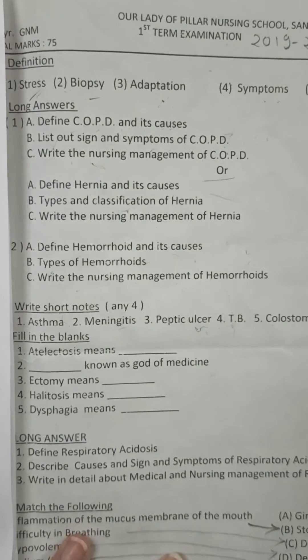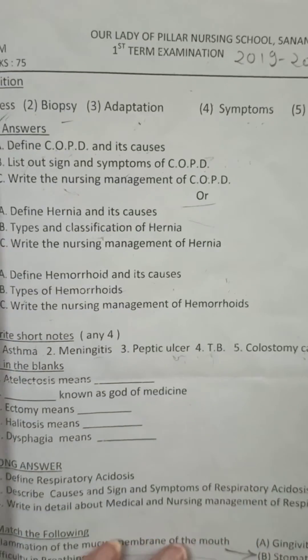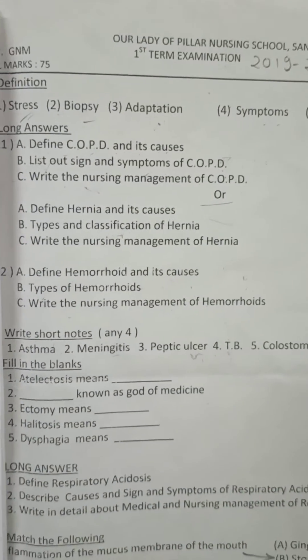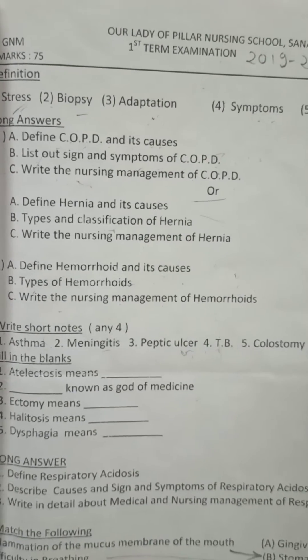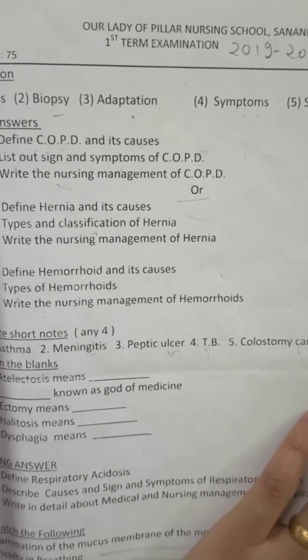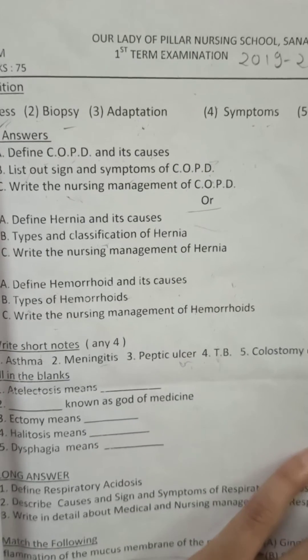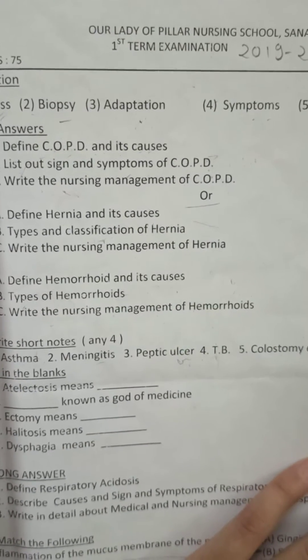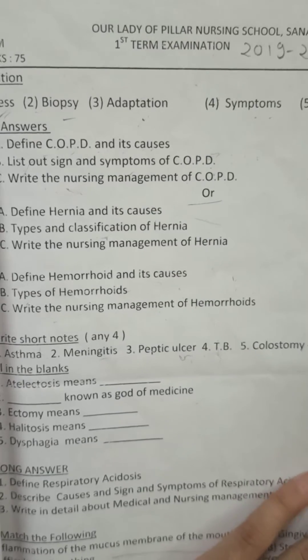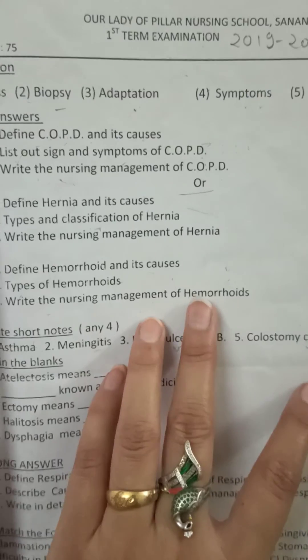Second question: define hemorrhoid and its cause. Hemorrhoid is also known as piles. We discussed this in the GI system. The definition of hemorrhoid: it is a swollen vein in the lowest part of your rectum or anus. Then write the types of hemorrhoid.